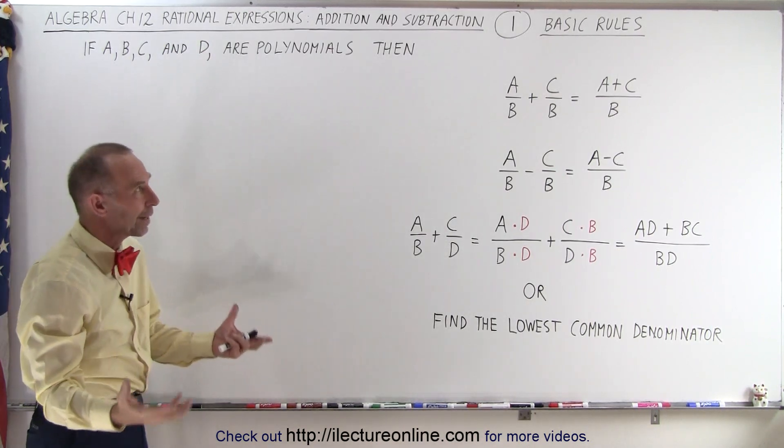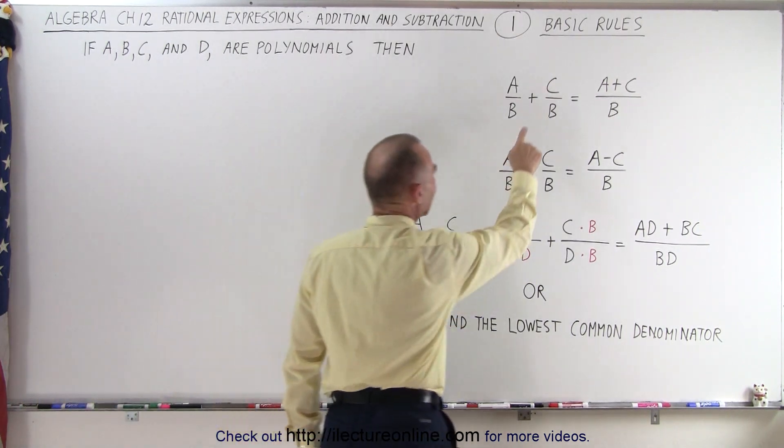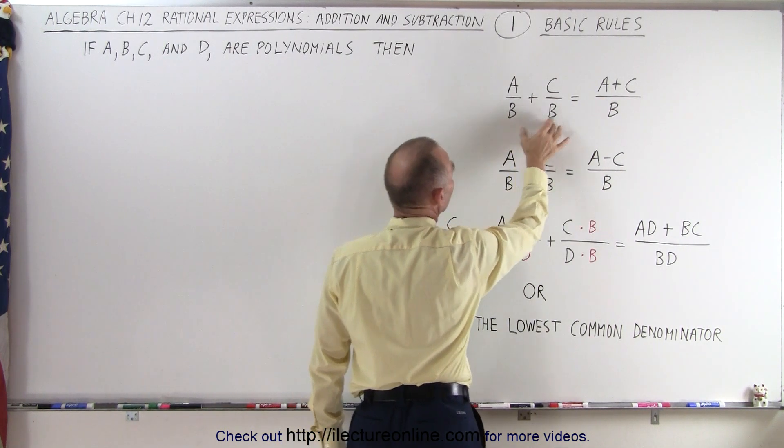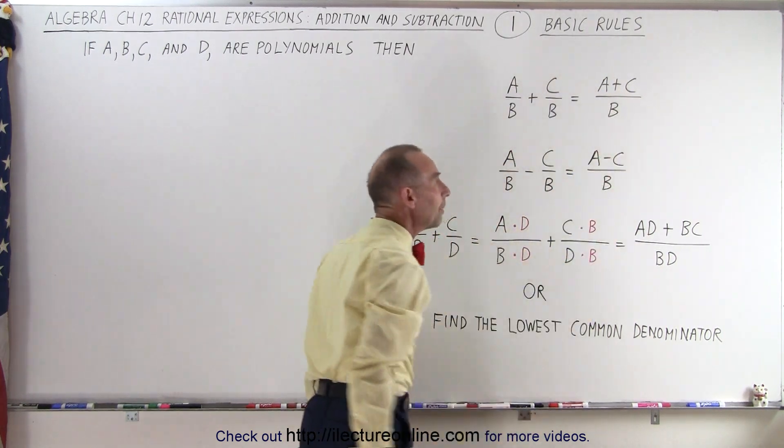Then what are the rules when we try to add and subtract? What are the basic rules? Well, first of all, notice that when we're adding and the denominators are the same, we can simply write both A and C as an addition, as a sum, over the common denominator.